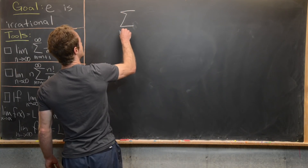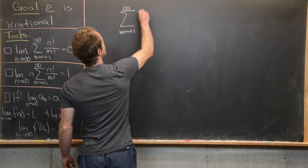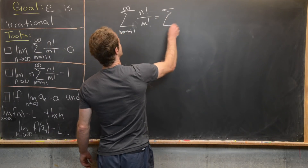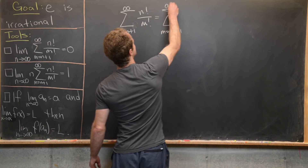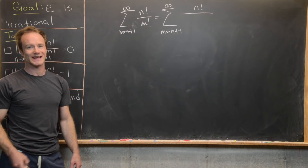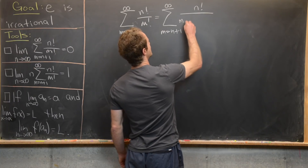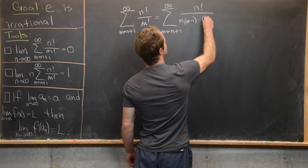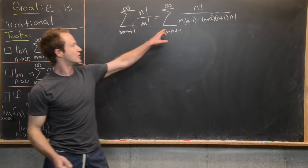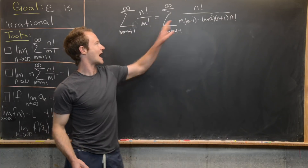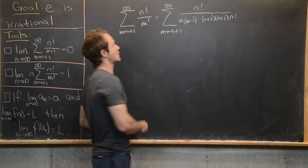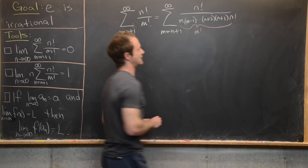We have this sum as m goes from n plus 1 to infinity of n factorial over m factorial. I want to rewrite the denominator carefully. Since all of these m's are bigger than or equal to n plus 1, I can rewrite it as m times (m minus 1) all the way down to (n plus 2) times (n plus 1) times n factorial. Notice if we collapse all of these together, we have a falling product starting at m, which is m factorial in the denominator — I've just rewritten m factorial in that careful way.